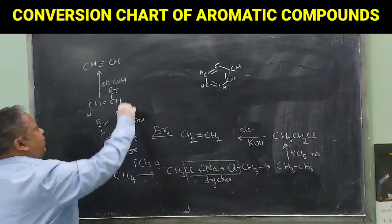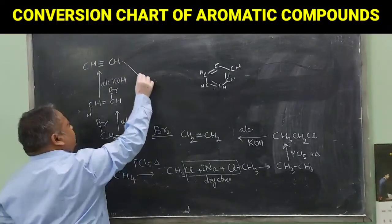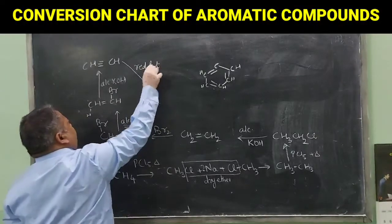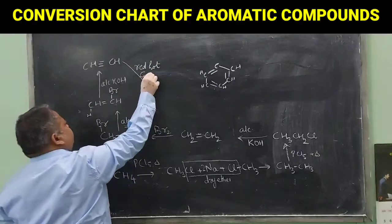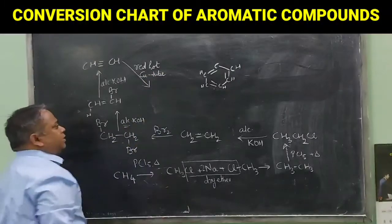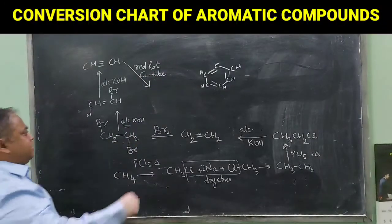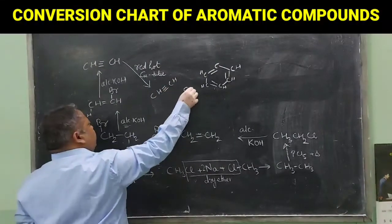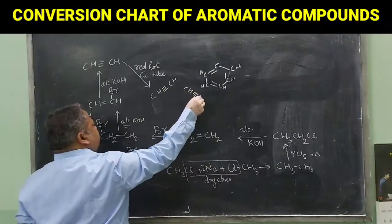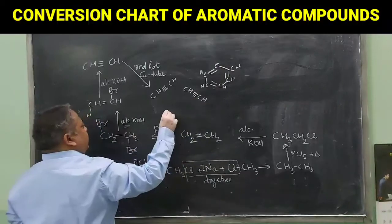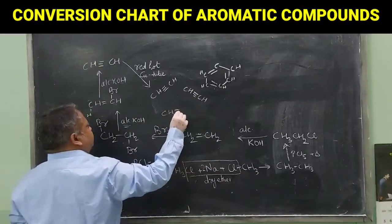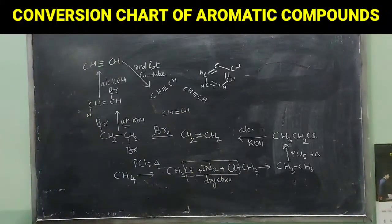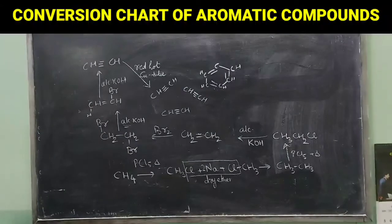So it will form CH triple bond CH. Now if this is passed through red hot copper tube, then cyclization takes place like this: one CH, another CH, another CH.